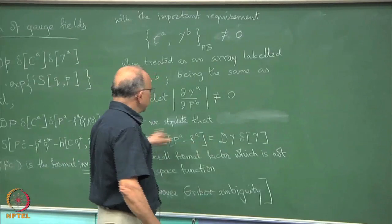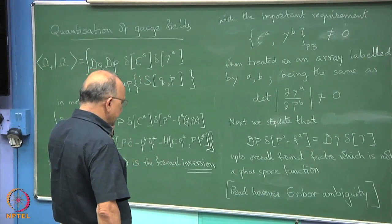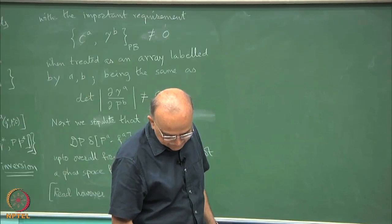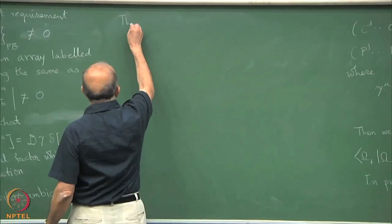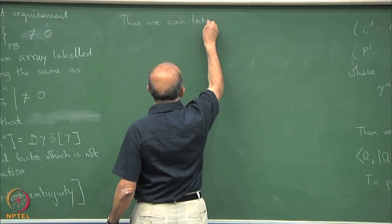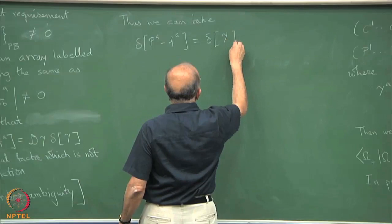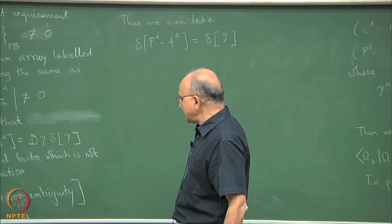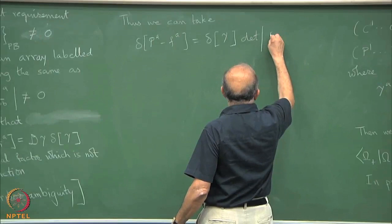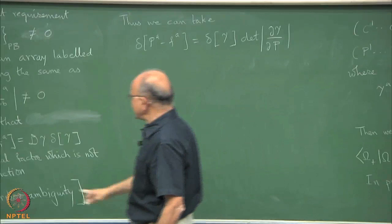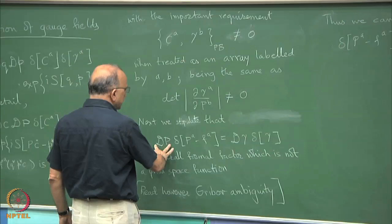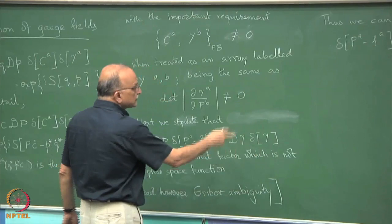If we assume this stipulation, then we claim that this δ(P_A - F_A) can then be taken to be times this determinant ∂γ/∂p, the Jacobian. Transferring the measure here. We can equivalently think of this as some measure times some distribution. Equivalently we take this to be the Jacobian of the transformation.